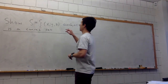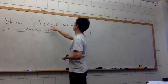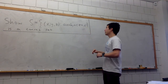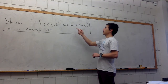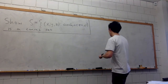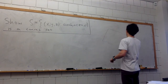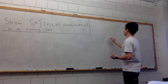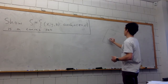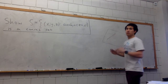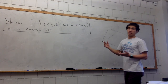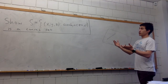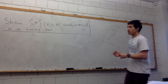In this video we're going to show that the set S, which is the set of triples (x, y, z) such that ax + by + cz = d, is a convex set. You might notice that this is the equation of a plane in three dimensions. What we're trying to show is that if we take any two points in this plane and look at the line segment between them, that line segment also lies in the plane. Geometrically this is pretty obvious, but we should show it rigorously using the definition of a convex set.